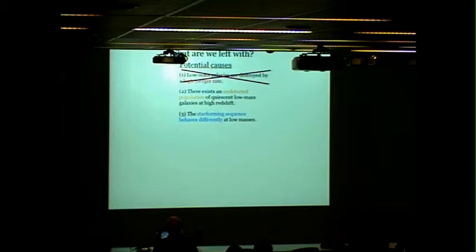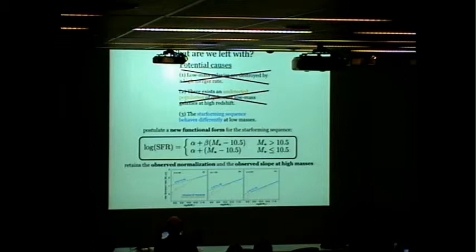There's also the possibility of an undetected population of quiescent low mass galaxies at high redshift. The Zforge mass functions are complete nominally down to these numbers, so we should see them. The number density of quiescent galaxies would have to increase by a factor of 1000 for this to work, which we probably would see at lower redshifts. So we can rule that out as well.